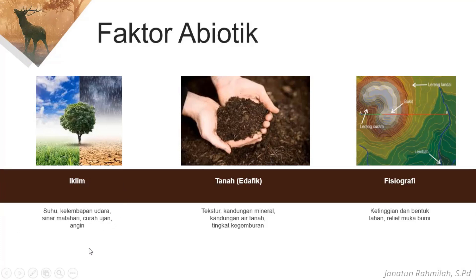Kenapa iklim bisa mempengaruhi persebaran flora fauna? Contohnya, flora fauna yang hidup di kawasan kutub punya ketahanan atau tingkat toleransi yang lebih tinggi terhadap suhu ekstrim antara siang dan malam, dibandingkan dengan flora dan fauna yang ada di wilayah tropis. Makanya ciri-ciri secara fisik pun berbeda. Angin juga sangat mempengaruhi — dia membantu proses regenerasi tumbuhan dengan penyerbukan atau pembuahan beberapa jenis tumbuhan.